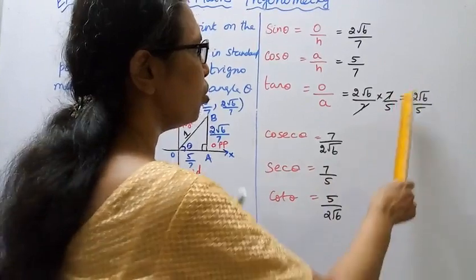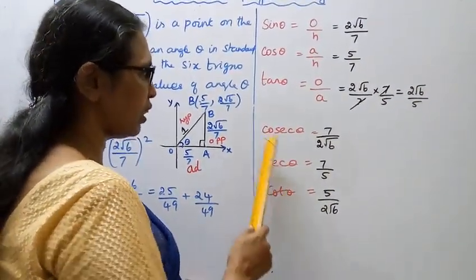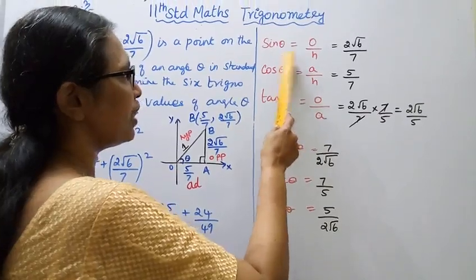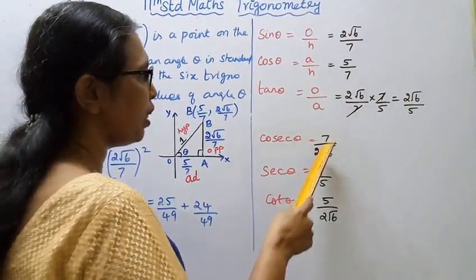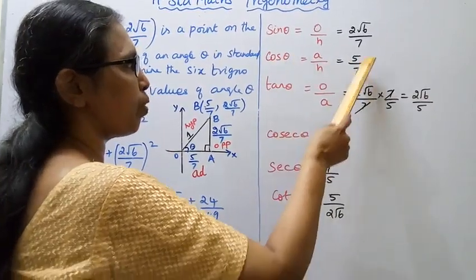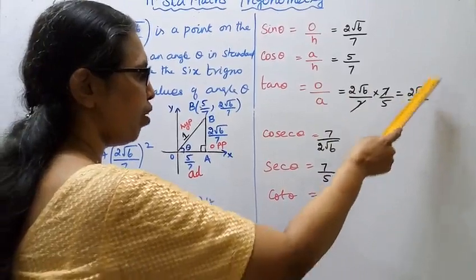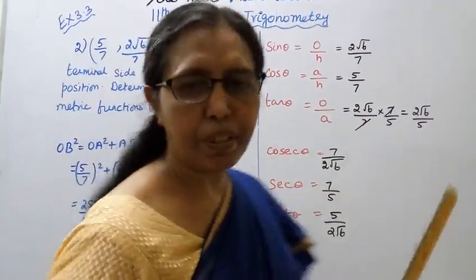Cosecant theta is the reciprocal of sine: 7/(2√6). Secant theta is the reciprocal of cosine: 7/5. Cotangent theta is the reciprocal of tangent: 5/(2√6).